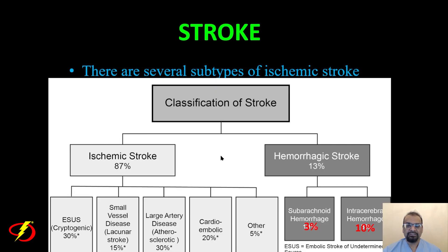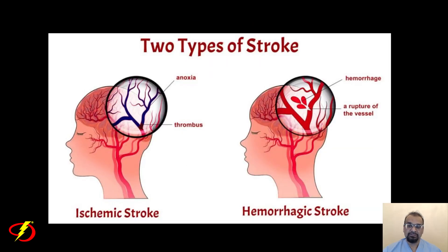There are several different subtypes or etiologies of ischemic stroke, which accounts for about 87% of all stroke. These subtypes will be discussed in a future lecture. For now, the key distinction is: an ischemic stroke is caused by an occluded blood vessel supplying the brain, while a hemorrhagic stroke is caused by a leaking blood vessel in the brain — intracerebral hemorrhage — or covering the brain — subarachnoid hemorrhage.